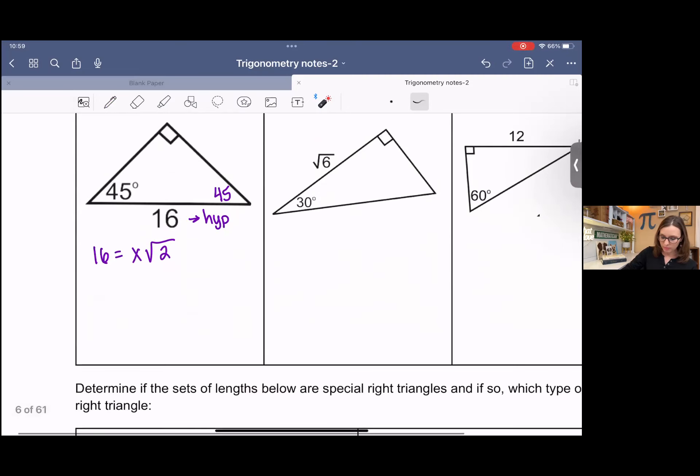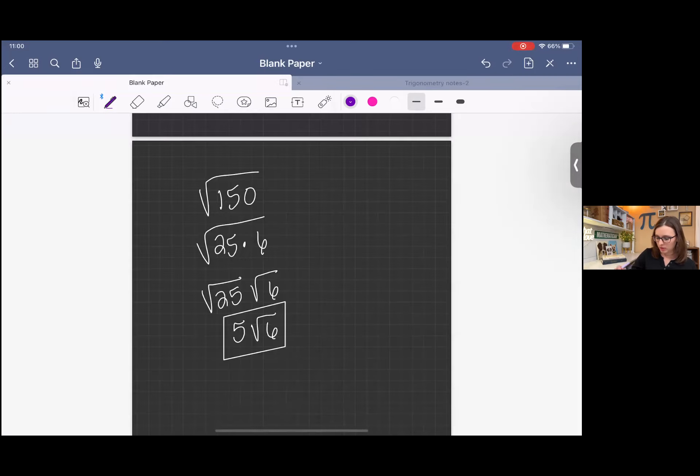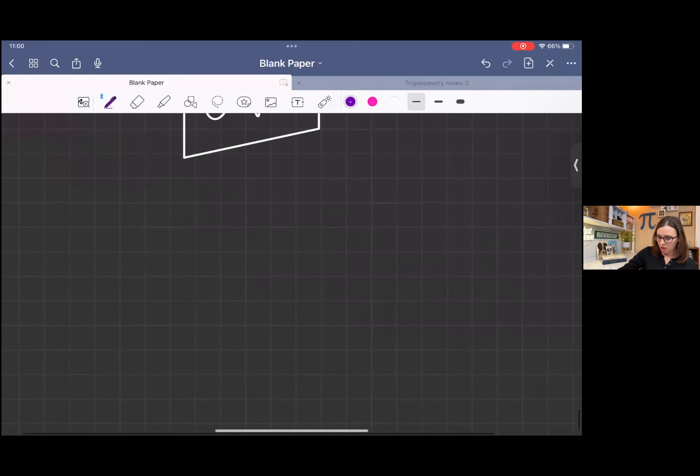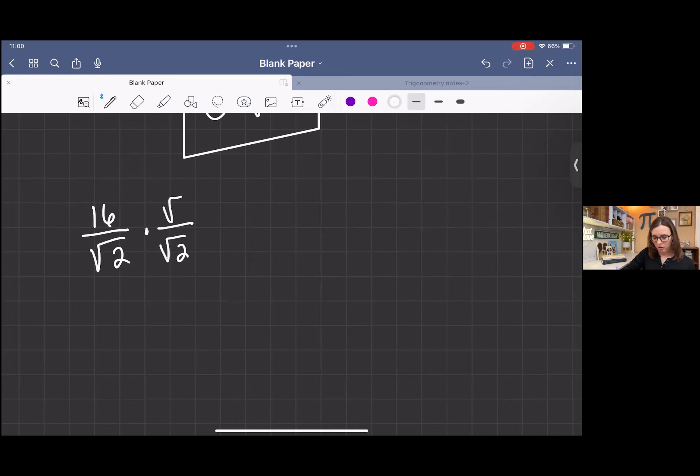The hypotenuse is always going to follow this model. So I know that 16 is going to be equal to x root 2. Then if I solve for x, I'm going to divide by root 2 on both sides. And you might have learned in algebra that when the square root's under the fraction bar, when it's in the denominator, it's not completely simplified. So we want to do what's called rationalize the denominator. I'm going to go to a different sheet of paper so that I can have some extra space here.